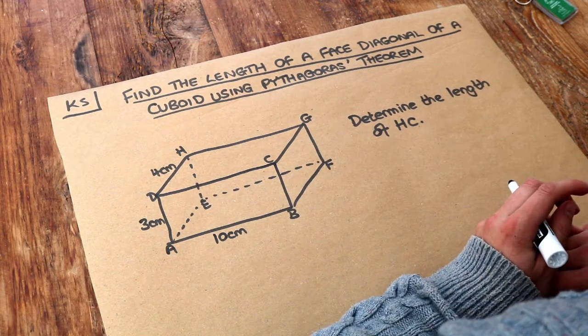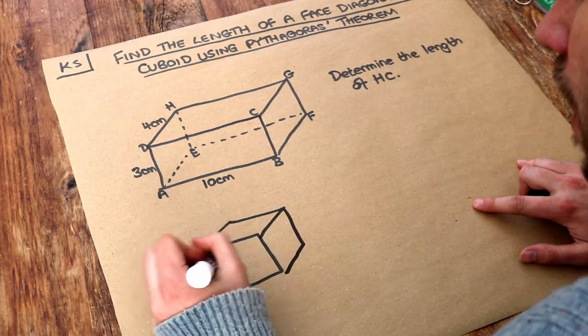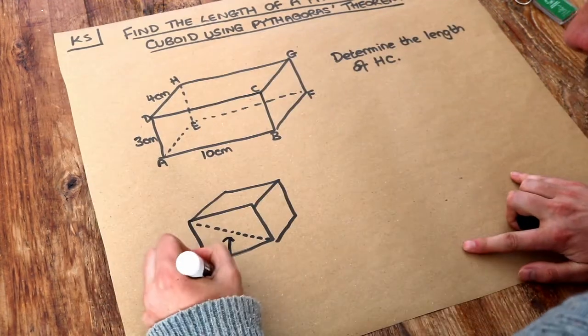Now let me just define what I mean by face diagonal. If you have some cube or cuboid, then a face diagonal is a diagonal that goes over a face, hence the name.